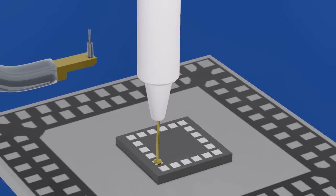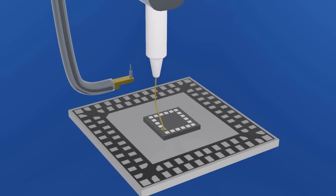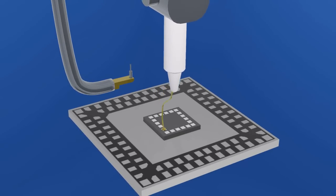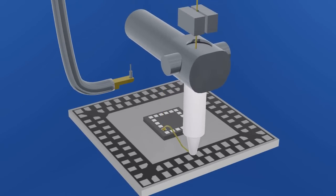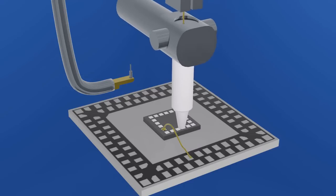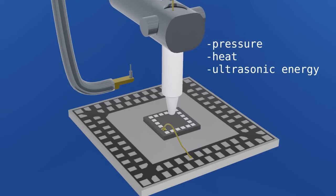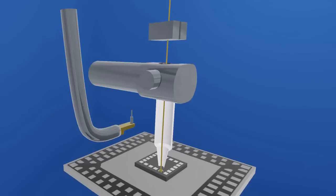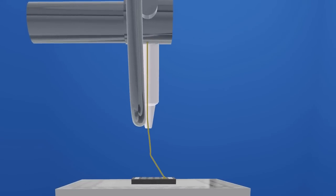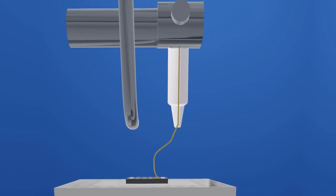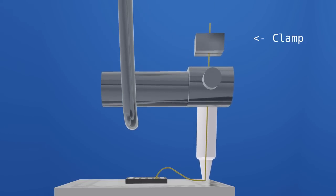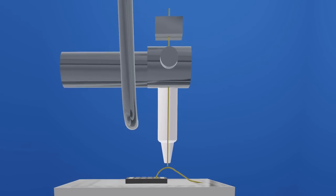The tool then allows the gold wire to spool out in an arc to the package lead frame terminal of interest. The second bond is then formed by pressure, heat, and ultrasonic energy at the package terminal. The tool then applies a clamp to the wire, retracts the wire slightly, severing it from the rest of the spool, completing the process.